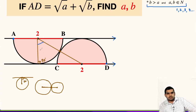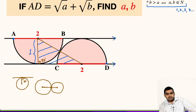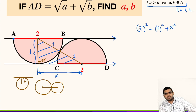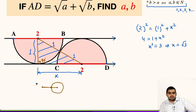Now let us focus on this right triangle. This side will be the radius of the semicircle. The diameter is 2 units, so this length will be 1 unit. The hypotenuse is 1 unit (radius of the first semicircle) plus 1 unit (radius of the second semicircle), giving 2 units. Let us name the unknown side as x. Using the Pythagorean theorem: 2² = 1² + x², so 4 = 1 + x², giving x² = 3, and therefore x = √3.